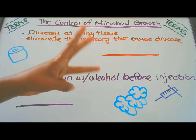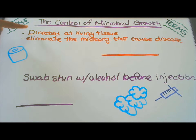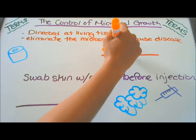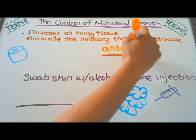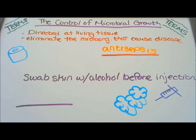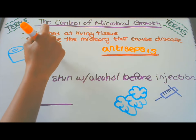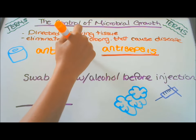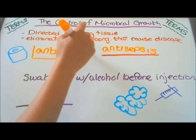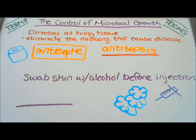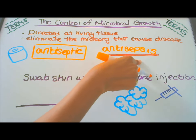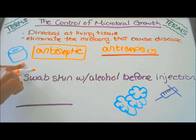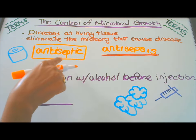Our third definition is antisepsis — infection control directed at living tissue. The chemical that is put on the living tissue is called an antiseptic. Here I have a roll of tissue to help you remember that antisepsis is directed at living tissue, and the chemical used is called antiseptic.